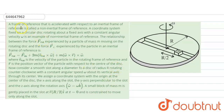In this question, a frame of reference that is accelerated with respect to an inertial frame of reference is called a non-inertial frame of reference. Any accelerating frame is known as a non-inertial frame of reference. A coordinate system fixed on a circular disc rotating about a fixed axis with constant angular velocity is an example of a non-inertial frame of reference.